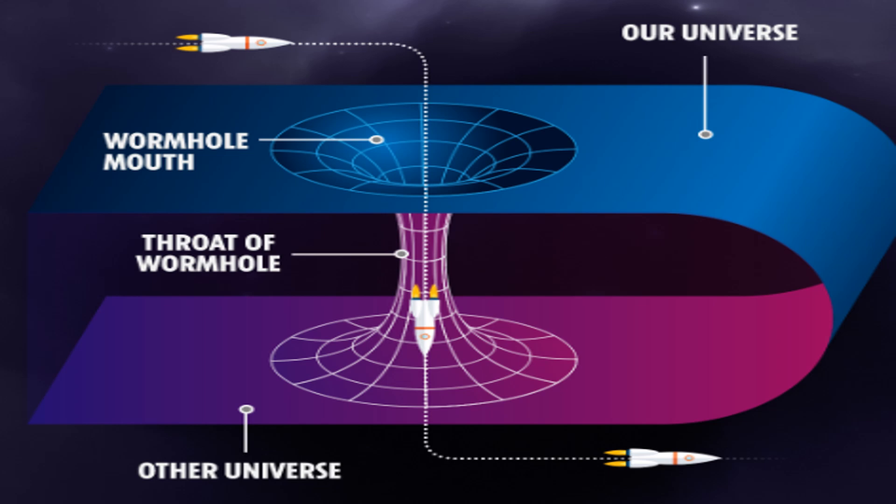The mouth of a wormhole can be visualized as a black hole and a white hole connected by a throat. The black hole acts as an entry point where objects fall in and the white hole is the exit, where objects are ejected. However, white holes are theoretical constructs that haven't been observed in nature. Some also talk about the idea of two black holes being adjacent to one another, possibly creating a wormhole.